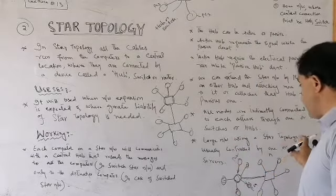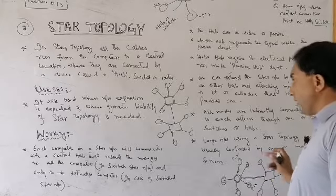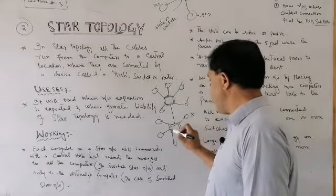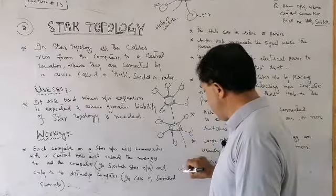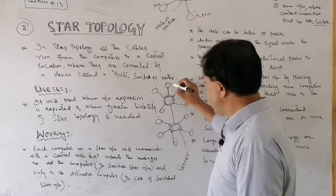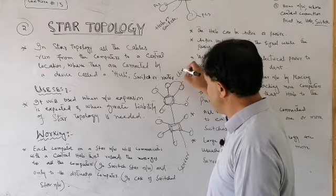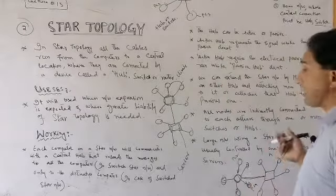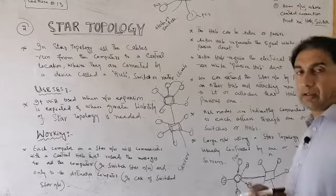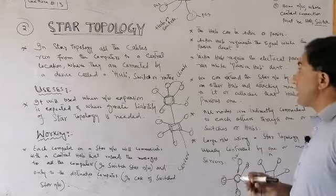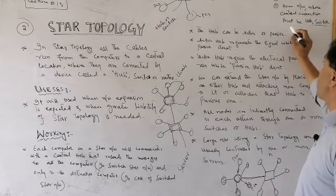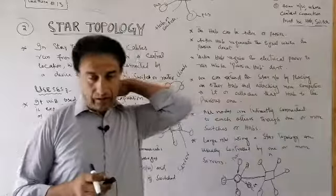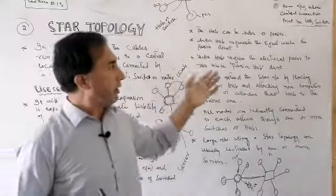Large networks using star topology are usually controlled by one or more servers. In a star network, the central device acts as a server and the connected computers act as clients. Ethernet is an example that works on star topology. Home networks, where the central connection point is a hub or switch, are also a common example of star topology.